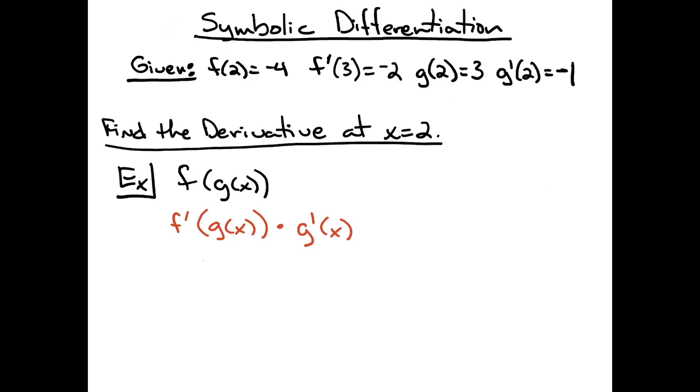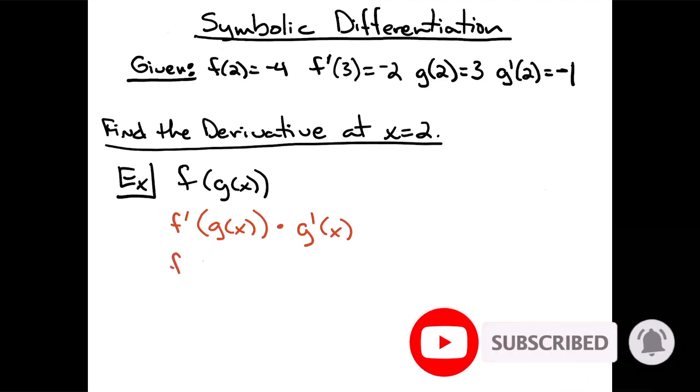This is a straightforward example of chain rule. Since it's asking me to calculate the derivative at x=2, I'm going to replace with 2. So f'(g(2)) times g'(2).